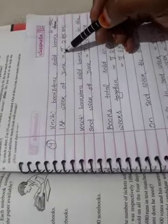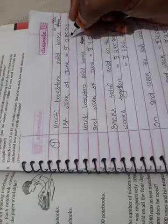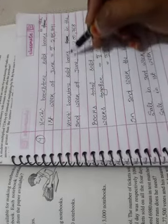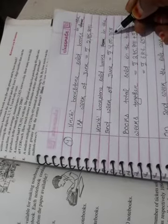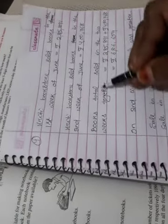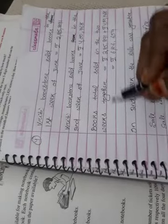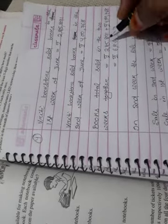Answer. Kirti Bookstore sold books in the first week of June is equal to Rs. 285,891. Kirti Bookstore sold books in the second week of June is equal to Rs. 4,768.